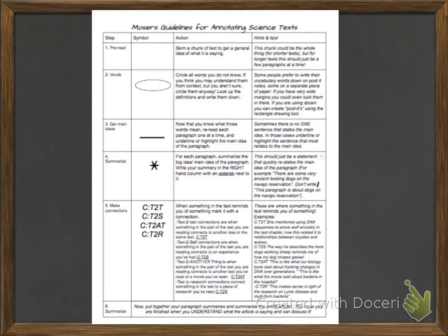The annotation guidelines you see here are something I've developed — I really stole them from an English teacher and modified them to make them more applicable to reading science texts. The first step is always to pre-read the text, to skim a chunk of text looking at titles, headings, and pictures. Those chunks, depending on how long the paragraphs are and how complicated the wording is, could be a single paragraph or three or four paragraphs together if they're really short. Then you're going to want to circle any vocabulary words that you do not know — you can't skip those. You'll look them up, and it might take you more than one dictionary to do that.